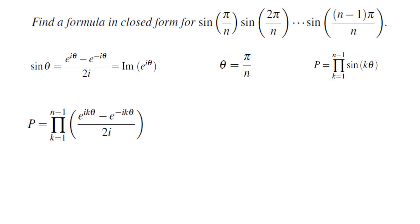So I will get the product, k equals 1 to n-1, (e^(ikθ) - e^(-ikθ))/2i. Simplifying that and factoring 2i and e^(-ikθ), I will get this product.